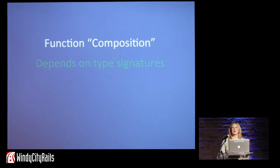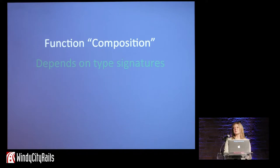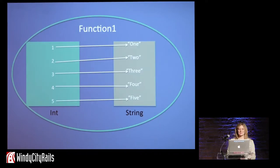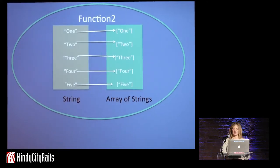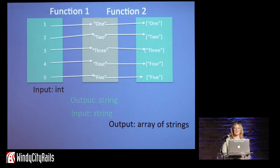Function composition depends on type signatures. This is where functional programming starts to break down for people. At Mind Minds we teach people Ruby, but we make them think about type signatures as well, even though they don't have to write them down like they may in Haskell, because it helps them become better programmers and think about how they will compose. Here we have function one, which takes an int and returns a string, and function two, which takes a string and returns an array of strings. The output from function one is used as the input for function two. Because there are no side effects, I can compose these reliably.